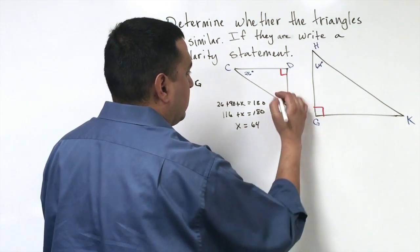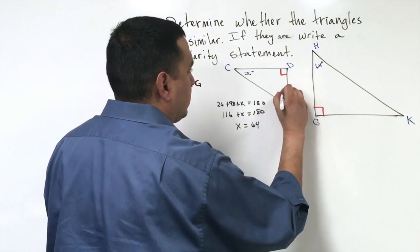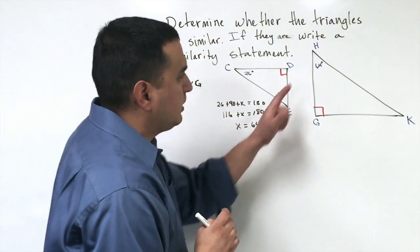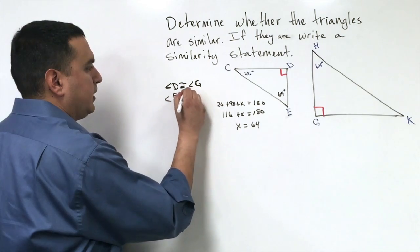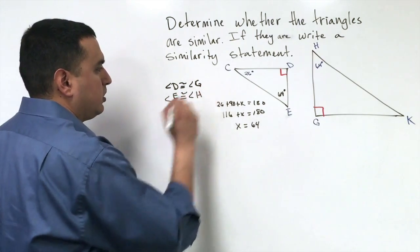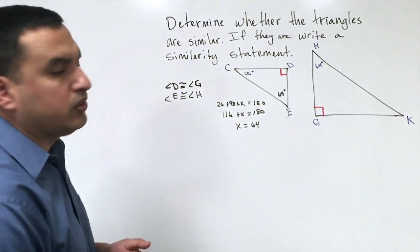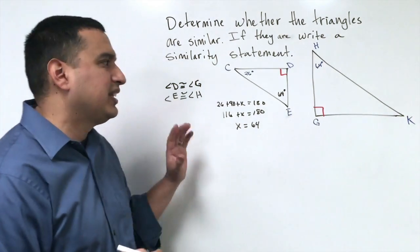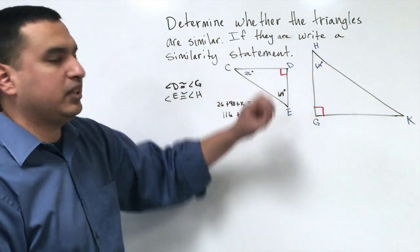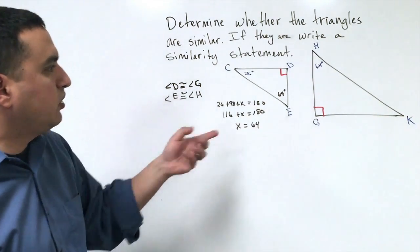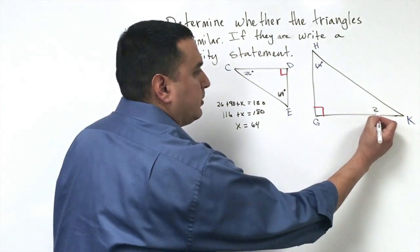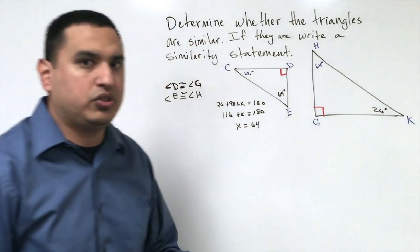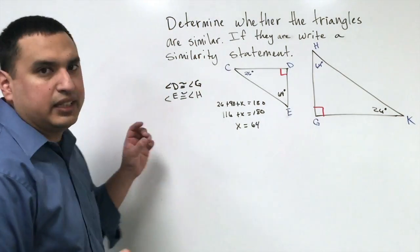So that tells me here that this angle E is actually 64 degrees. And that tells me then that angle E is in fact congruent to angle H. And according to the angle-angle similarity theorem, that's all I need to prove. I don't need to know anything about the sides. I don't need to know anything about this angle K. But that's it. I just need two pairs.